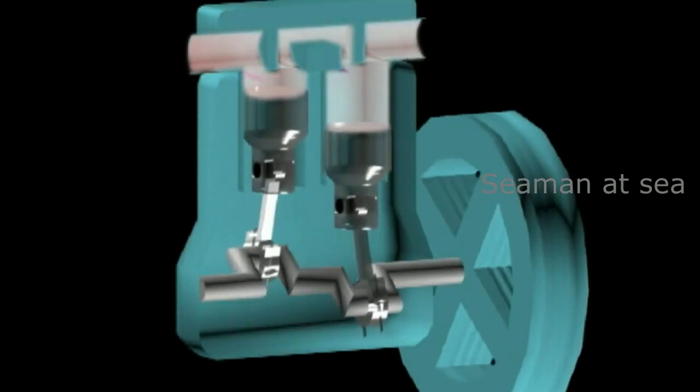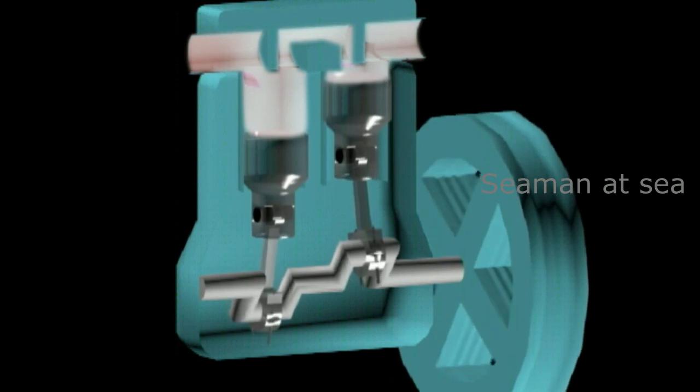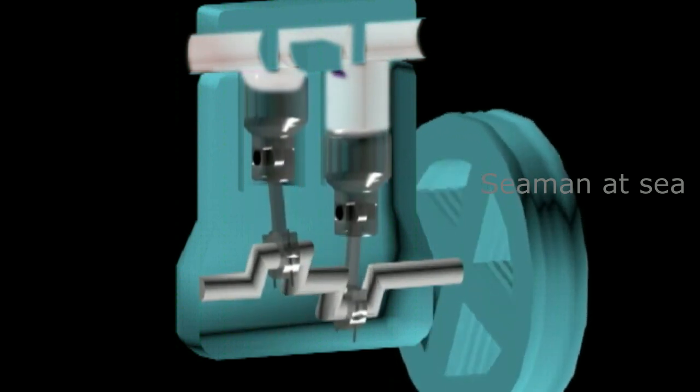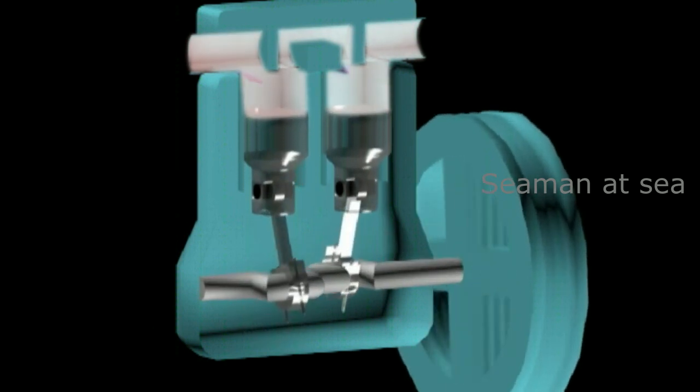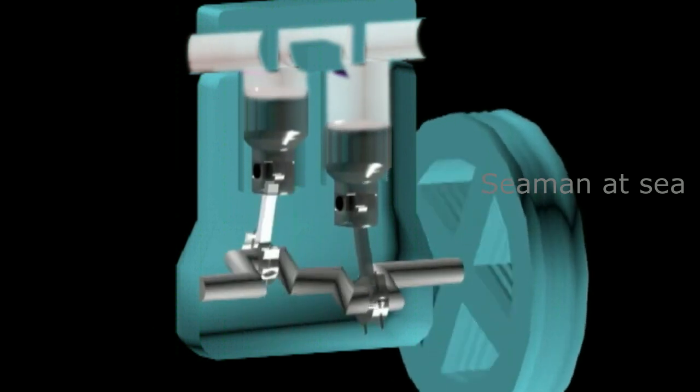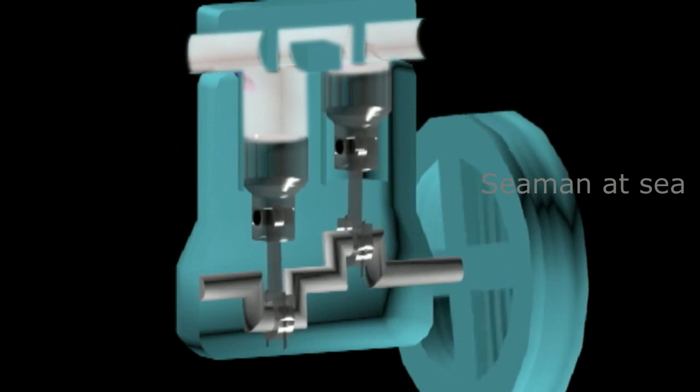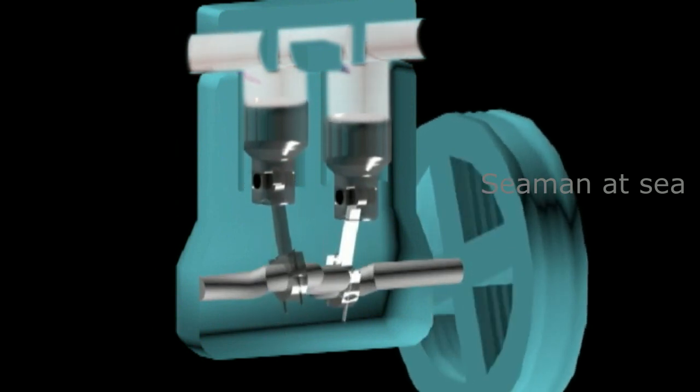Compressor is used to compress the refrigerant, producing the pressurized refrigerant of high temperature and pressure. The raising of the refrigerant pressure will cause its saturation temperature to rise so that it is higher than that of the cooling substance in the condenser.